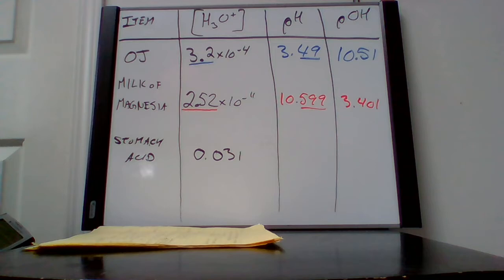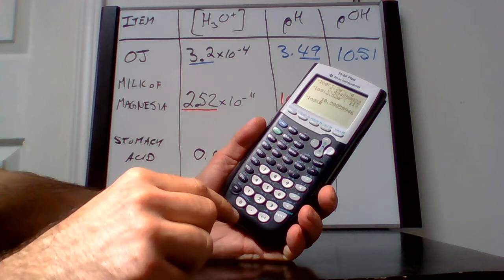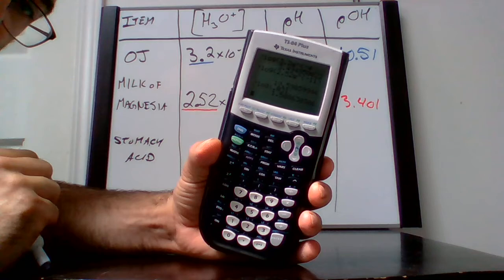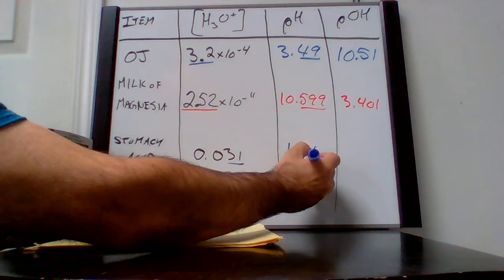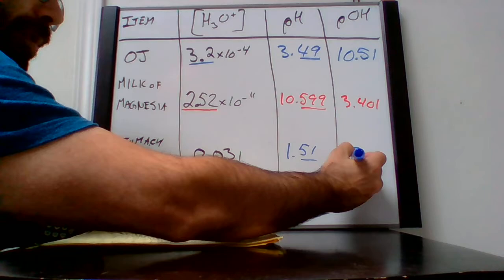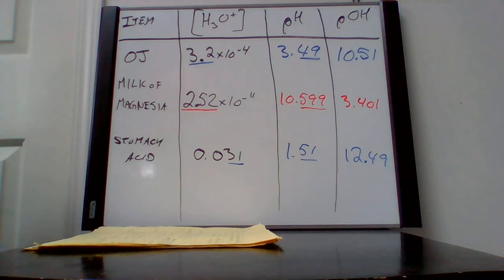For stomach acid at 0.031 molar, the negative log of 0.031 gives 1.508. With two sig figs, that rounds to 1.51 — two decimal places — leading to a pOH of 12.49.